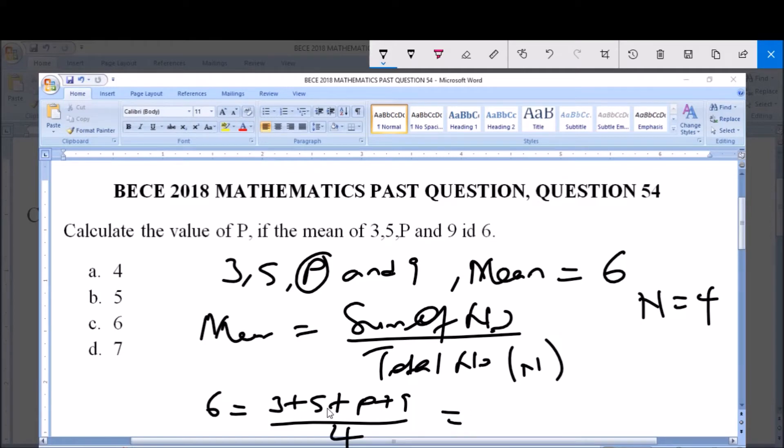This is equal to 3 plus 5, which gives us 8. 8 plus 9 gives us 17. So it is 17 plus P, all over 4. Therefore we say 6, which is the mean, is equal to (17 + P) / 4.